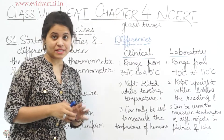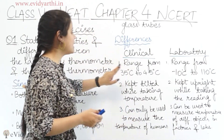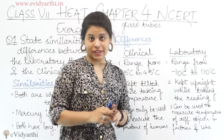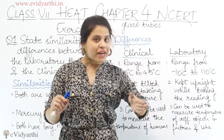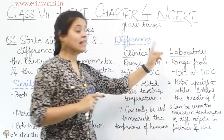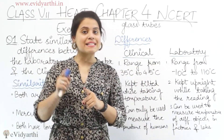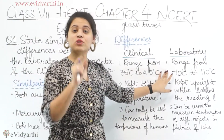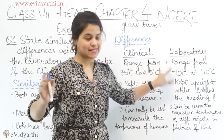Now coming to the differences — doonoh mein kya difference hai? The clinical thermometer has a range from 35 degree Celsius to 45 degree Celsius. Jo clinical wala hota hai, uska scale 35 degree Celsius to 45 degree Celsius hota hai. Lekin, jo laboratory wala hota hai, its range is from minus 10 degree Celsius to 110 degree Celsius.